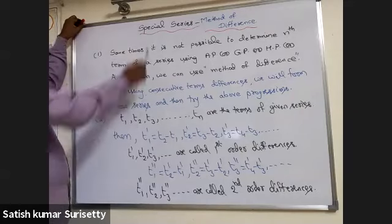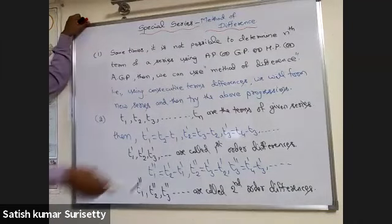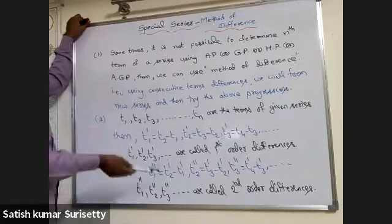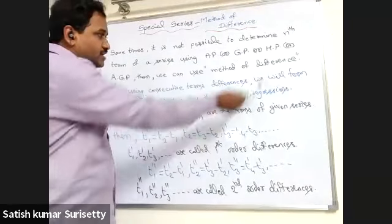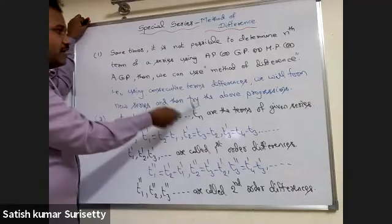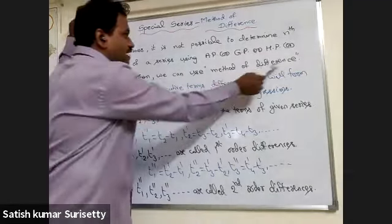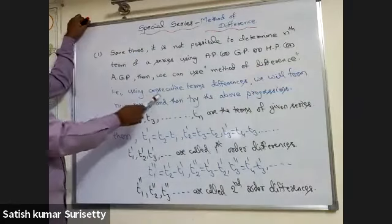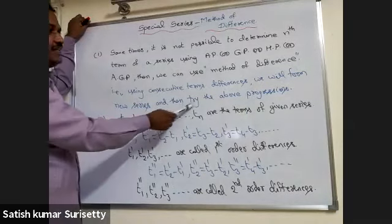Under the special series, the next concept is the method of differences. Sometimes it is not possible to determine the nth term of a series using the progressions we have discussed — arithmetic progression, geometric progression, harmonic progression, or arithmetic-geometric progression. In such cases, we can use the method of differences. The name itself tells us we have to use the consecutive term difference values to form a new series and then try the above progressions.